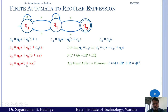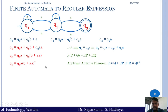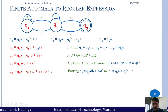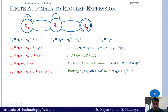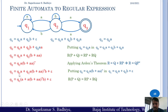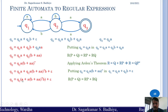Since q2 is still in terms of q1, we substitute this value of q2 into equation 1 for q1. We get: q1 = q1·a + q1·a·(b + aa)*·b + ε. Applying the distributive property and taking q1 as common, this becomes: q1 = q1·(a + a·(b + aa)*·b) + ε, which is again in the form of Arden's theorem.